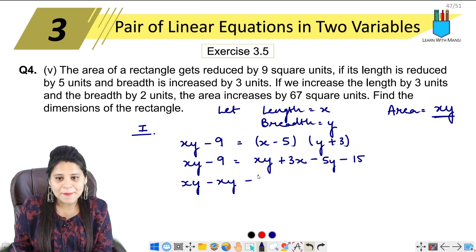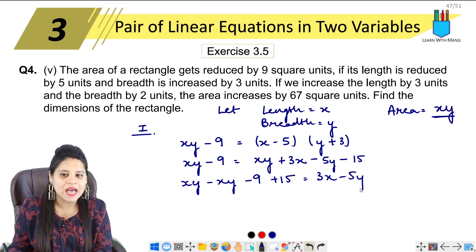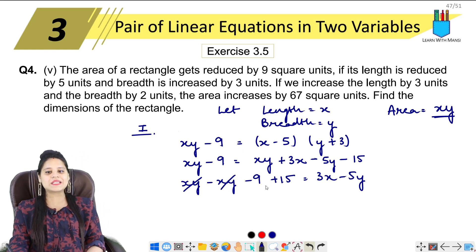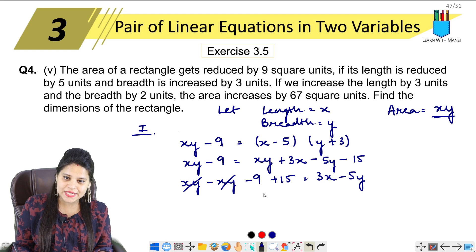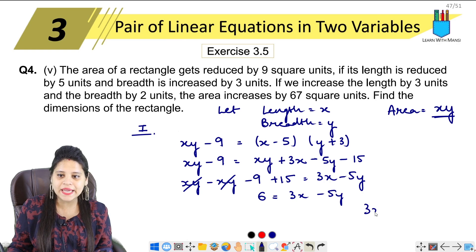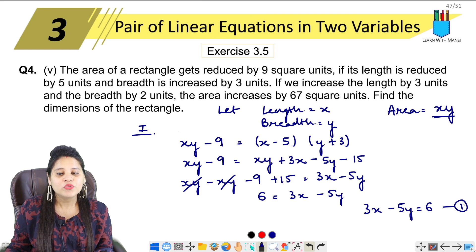After cancellation, −9 remains on the left. On the right we have 3x − 5y − 15. Moving −15 to the left: −9 + 15 = 6. So what remains is 3x − 5y = 6. Let's write it clearly: 3x − 5y = 6. This is our first equation.